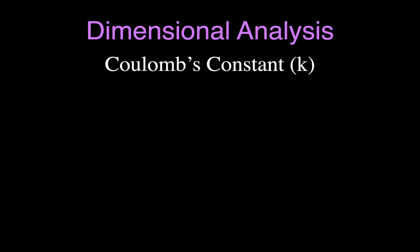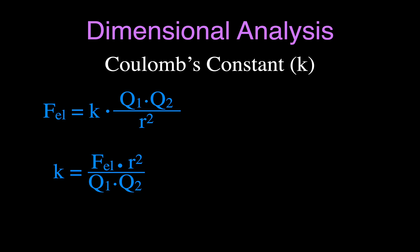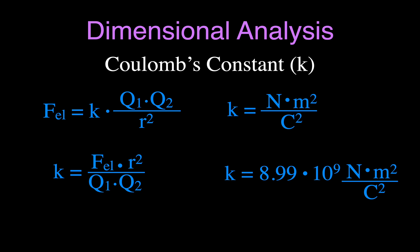We can do something very similar for Coulomb's Law and the Coulomb constant K. Coulomb's Law says the electric force equals K times the charge of one object times the charge of the other, divided by the square of the distance between them. Solving for K gives us force times distance squared divided by the two charges, which yields units of N·m²/C². Coulomb's constant is 8.99 × 10⁹ N·m²/C².